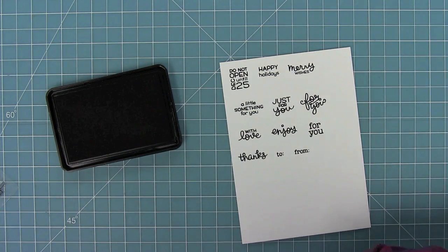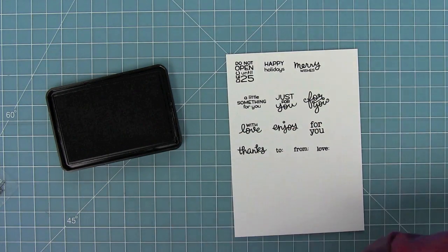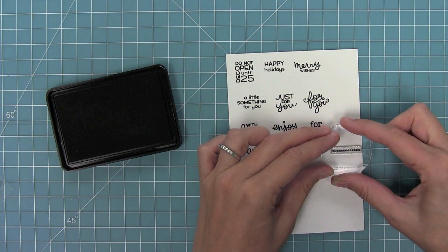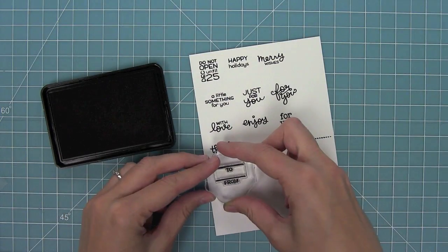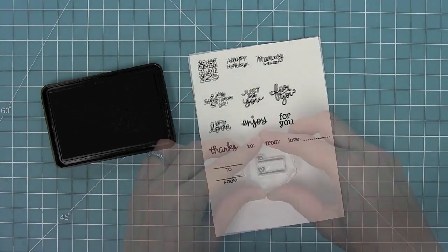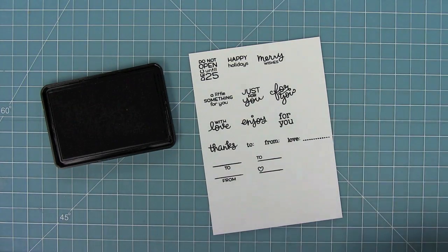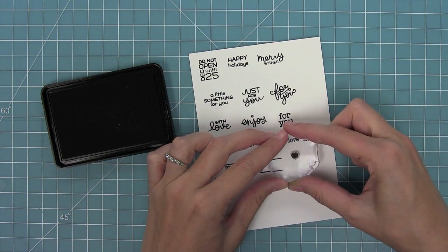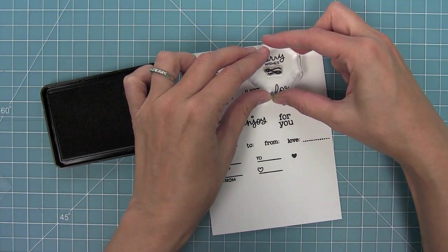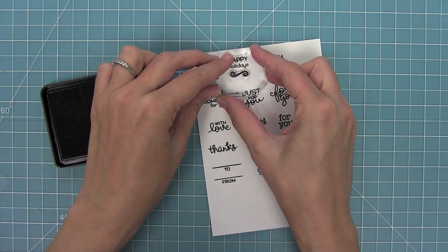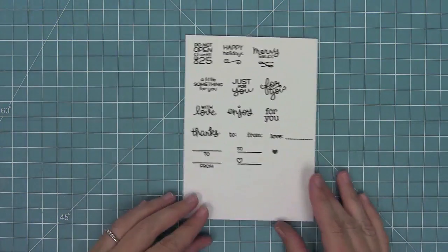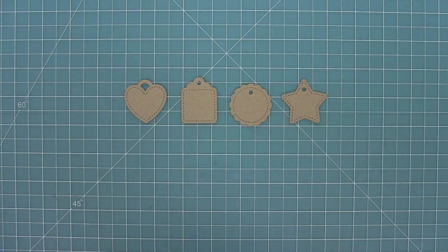And then a dotted line that can be placed after these phrases so that you can write someone's name in. And then we have some pre-built ones too. So we have this To and From, and then my favorite one with the To and the Heart. We also have a solid heart and then some little curly Q's that you could add to the bottoms of these phrases to just give them a little fancy touch. I just love that this set works for all year.